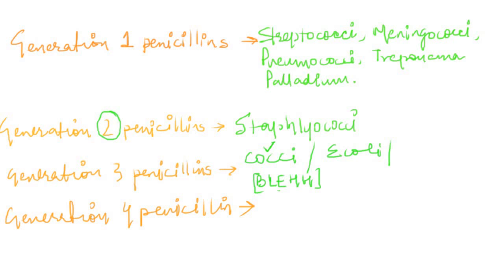Generation 4 penicillins are called extended spectrum penicillins and are mainly active against gram-negative rods. One of the most important is Pseudomonas aeruginosa. So generation 4 penicillins like piperacillin and ticarcillin cover Pseudomonas. Spend time learning these spectra through repeated revision for long-term retention.